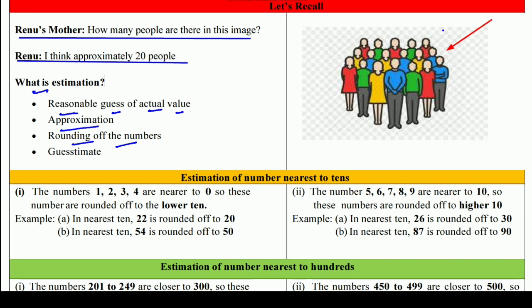कई बार calculation को easy करने के लिए rounding off कर देते हैं। जैसे अगर 99 और 49 है, तो 99 की जगह 100 और 49 की जगह 50 बोल दूं, तो सीधा 150 बोल सकते हैं। इसको हम guesstimate भी कहते हैं — guesstimate का मतलब है guess plus estimate।